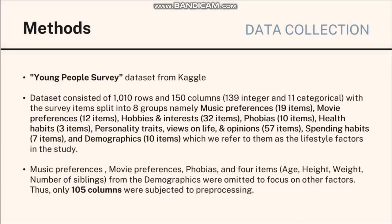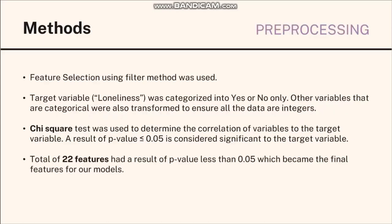Data used in the study is the Young People Survey from Kaggle with the survey items split into 8 groups, which refer to them as the lifestyle factors in the study. Integer values, except for the demographics, are based on a 5-point Likert scale. Music preferences, movie preferences, phobias, and 4 items from the demographics were omitted to focus on the other factors. Thus, only 105 columns were subjected to preprocessing.